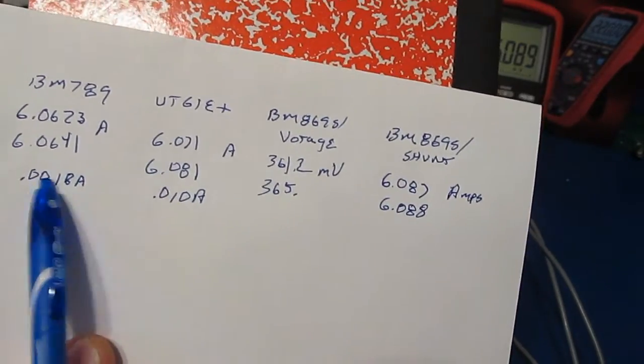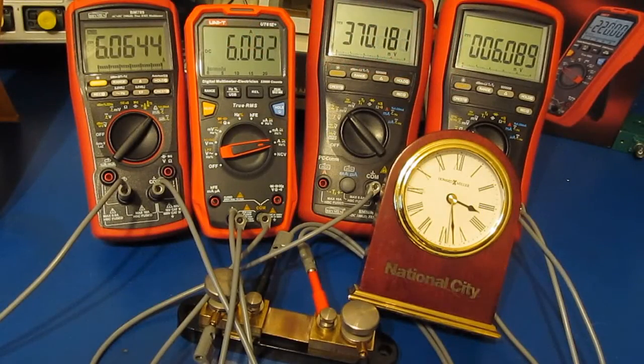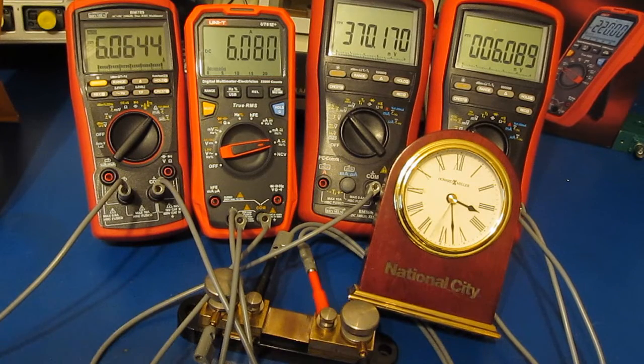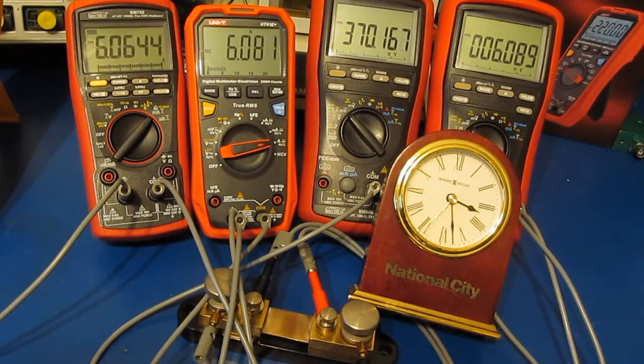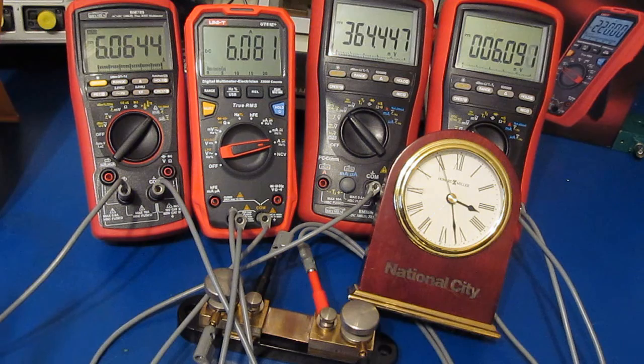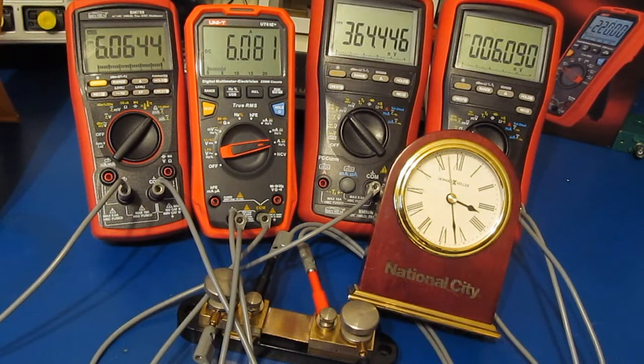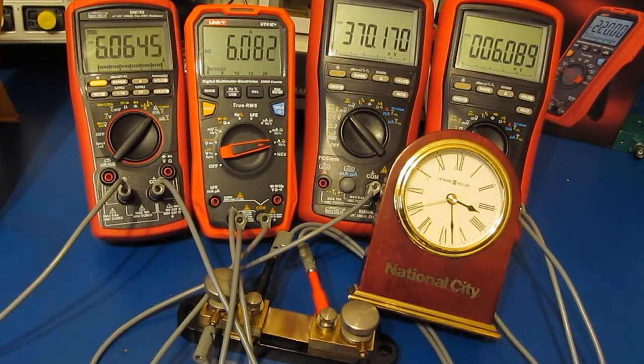Surely this UT 61E is by far the worst out of this. Hopefully I've shown that the UT 61E plus isn't the perfect zero drift meter that was mentioned in the forums. That's going to be it for this video. Hopefully you enjoyed the demonstration. Hope to see you in the next video. Later.